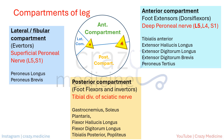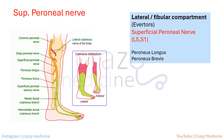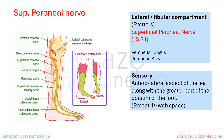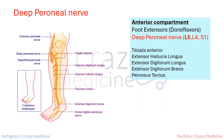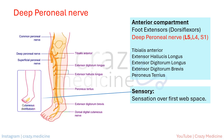Now let us discuss the cutaneous innervation of the lower limb below the knee, which has significant localizing value. The superficial peroneal nerve has sensory innervation to the anterolateral aspect of the leg along with the greater part of the dorsum of the foot, except the first web space. The deep peroneal nerve is responsible for sensory innervation of the first web space of the foot — the area between the first and second toes.